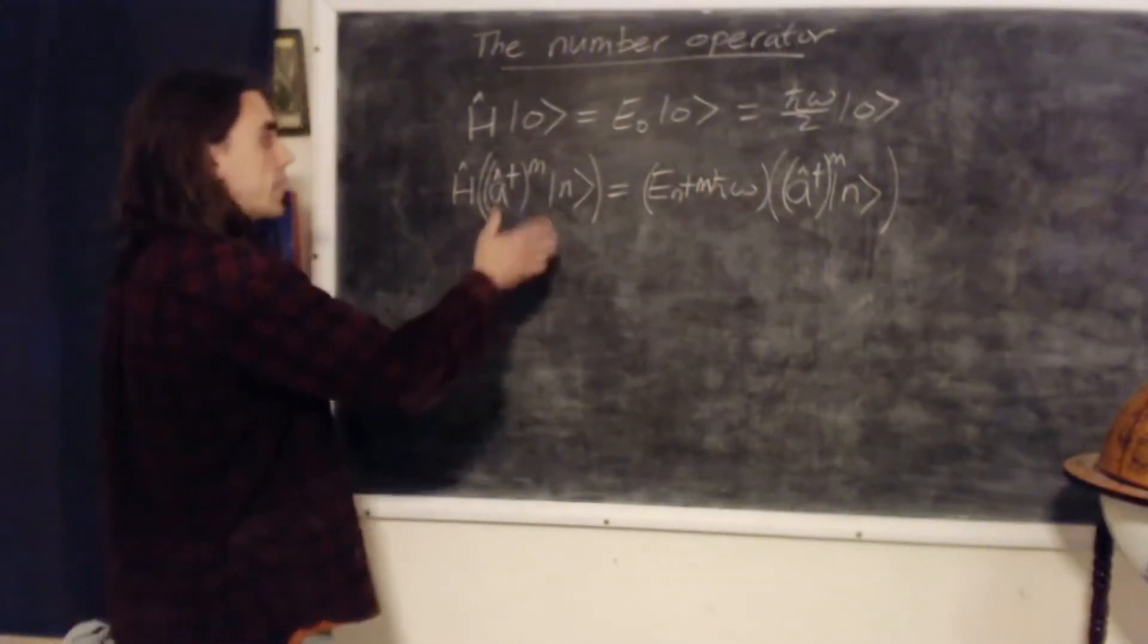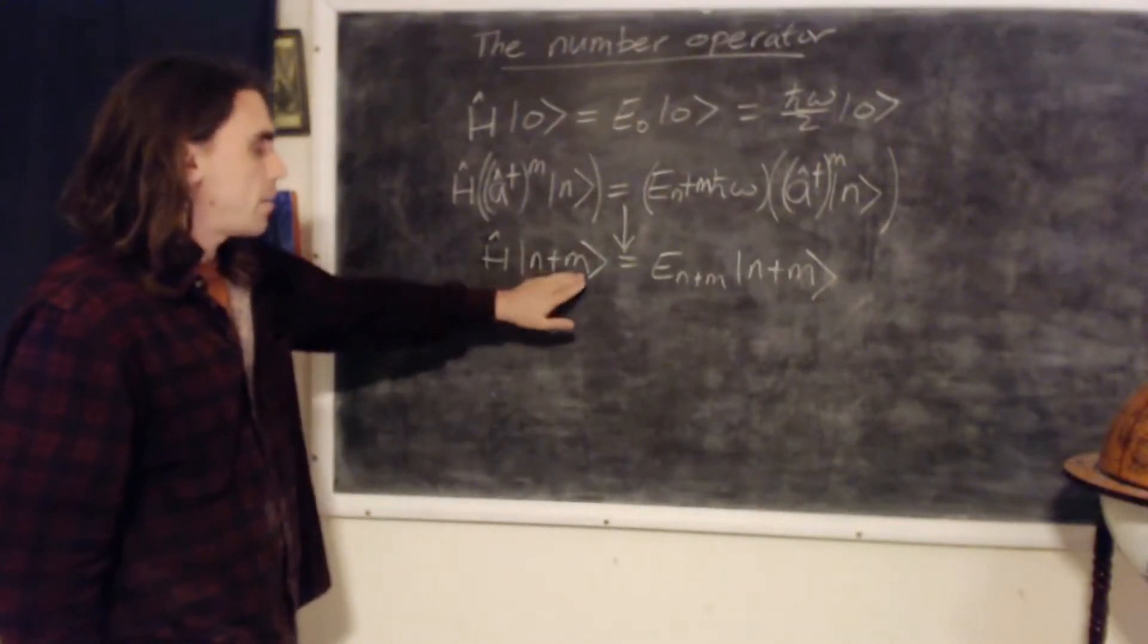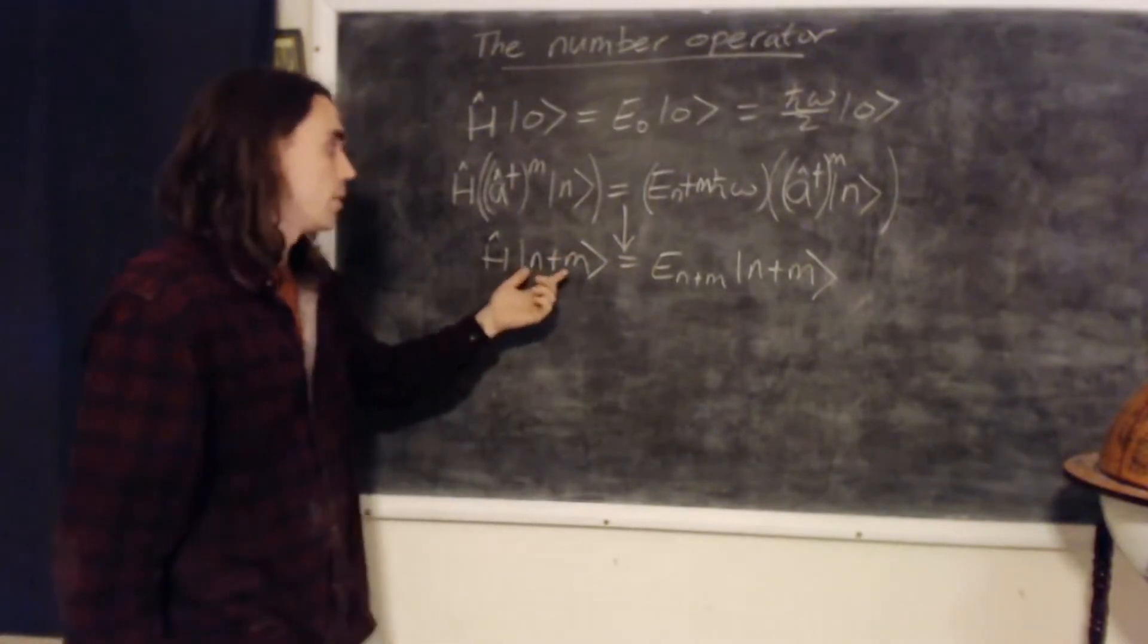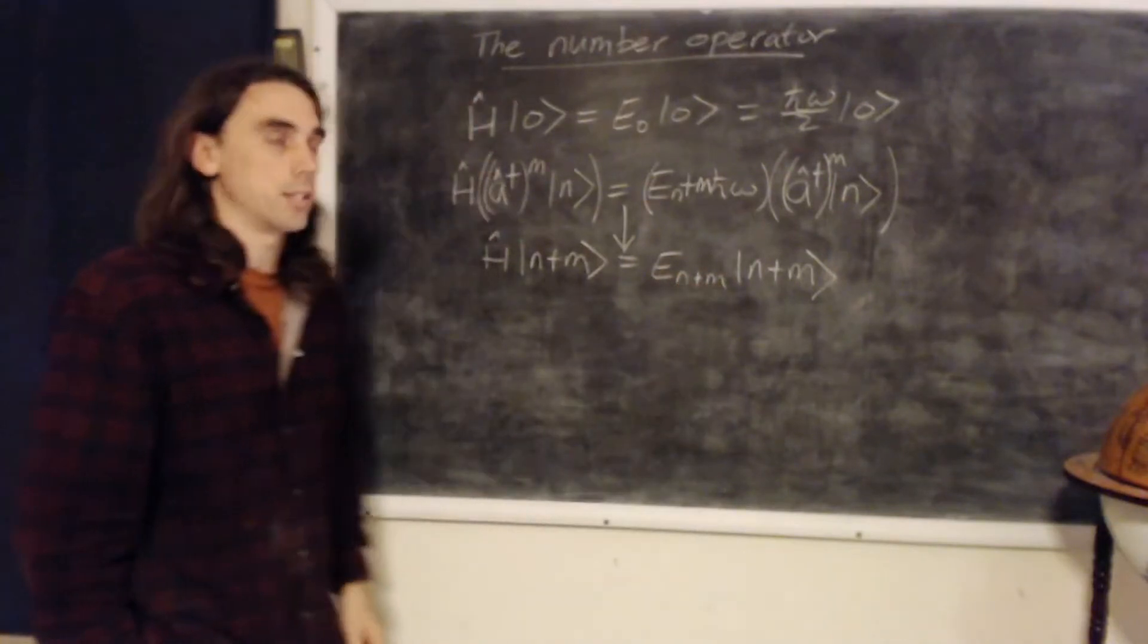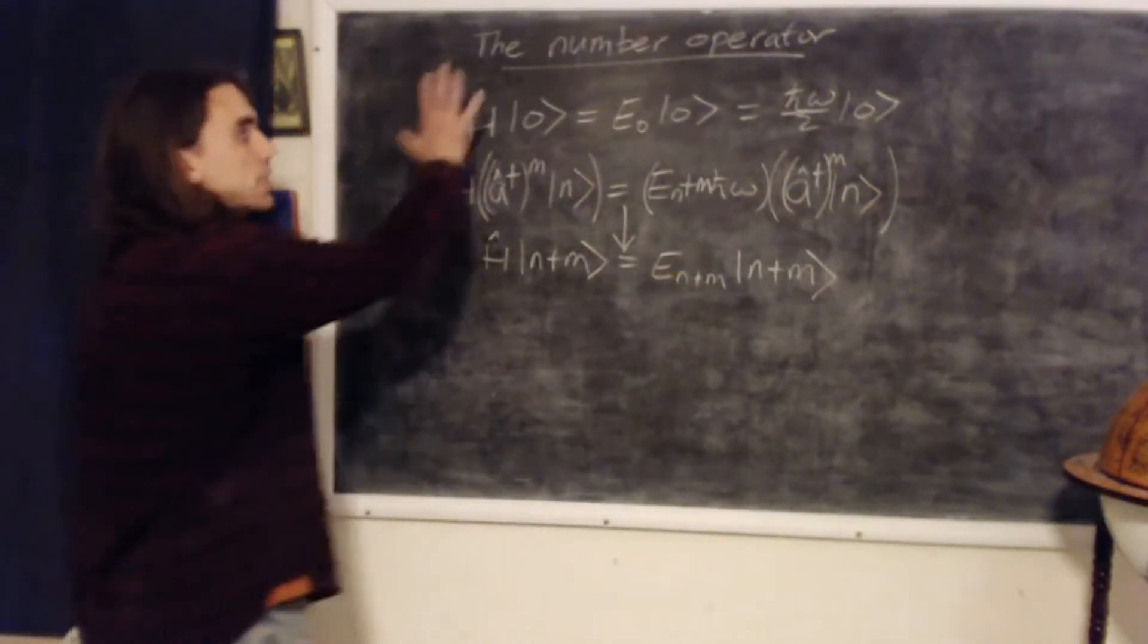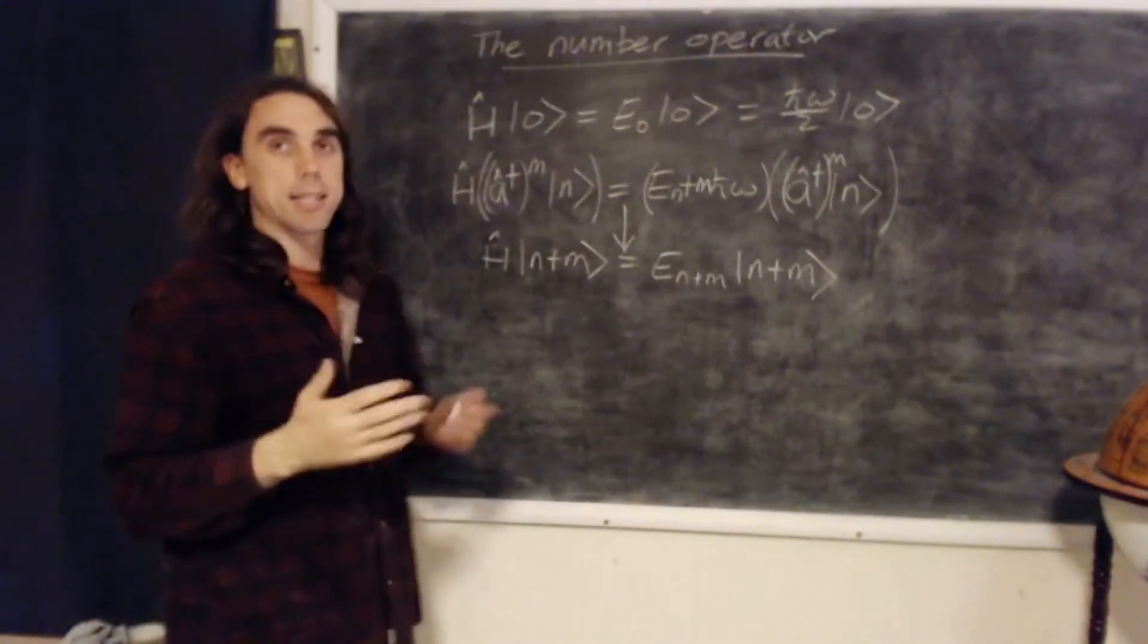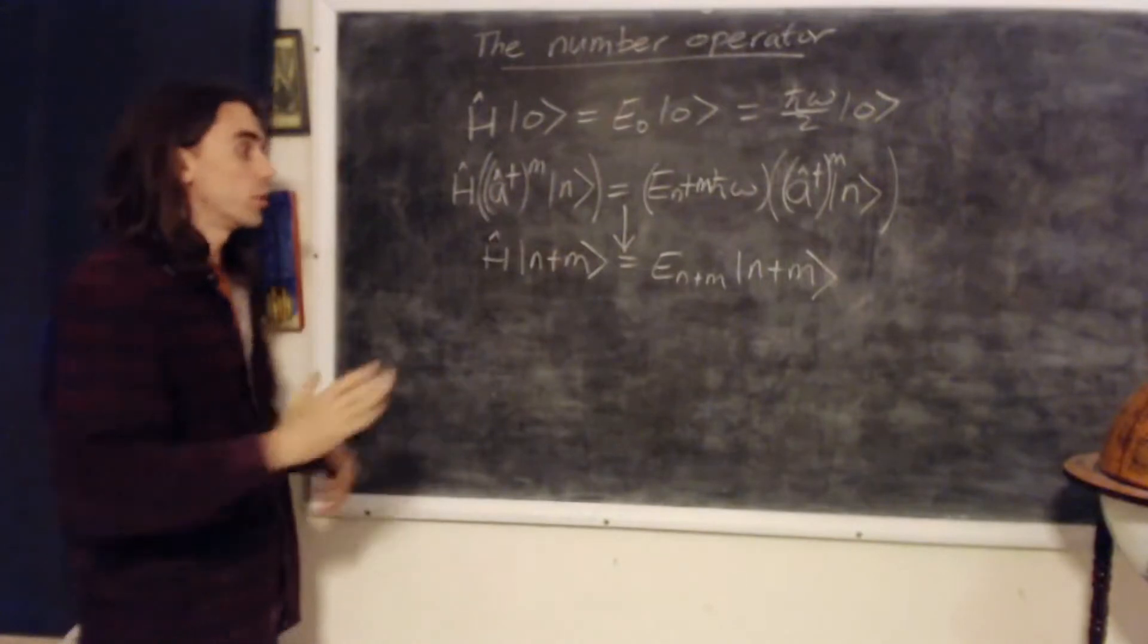So what this tells us is that we can write down state n plus m in here, again this is always just a label inside the ket, but this is a convenient one because it's an energy eigenstate with energy eigenvalue n plus m, where these are the two relevant integers. Putting this together we see that we have the ground state, we have an infinite ladder of excited states evenly spaced in energy above that ground state, and so we get the total solution to the problem.